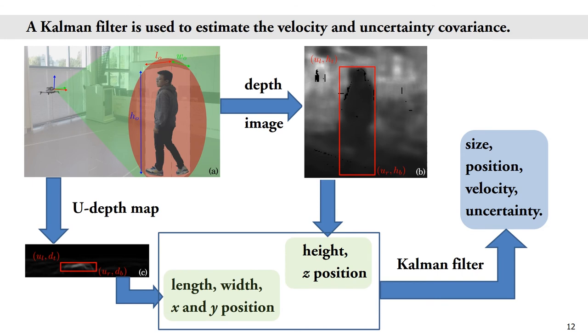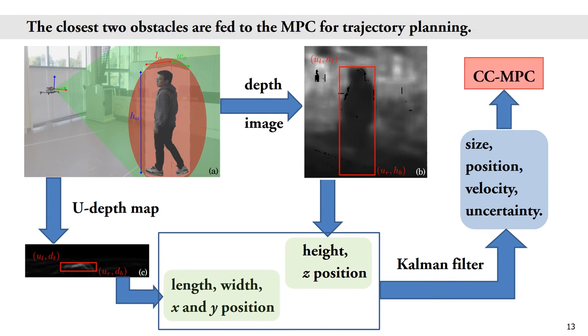Then, we use a Kalman filter to estimate the obstacle velocity and motion uncertainty. Finally, the closest two obstacles are expanded from three-dimensional boxes to ellipsoids and fed to the chance-constrained model predictive controller for collision-free trajectory planning.